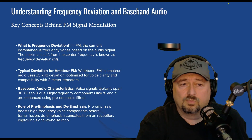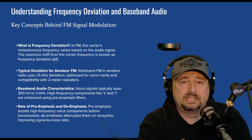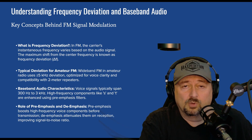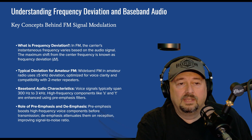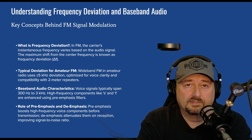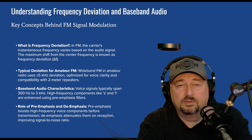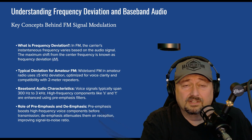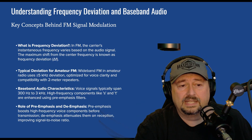The first question is: what is frequency deviation? It's the amount that the signal moves back and forth. When you see math formulas, it's defined as delta F — the change in frequency when you modulate via FM. We talked about it being around plus or minus 5 kilohertz, because it goes up and down the spectrum as we transmit.